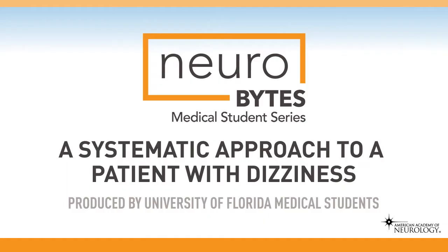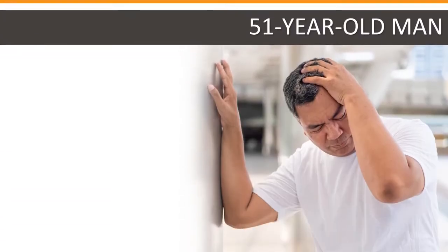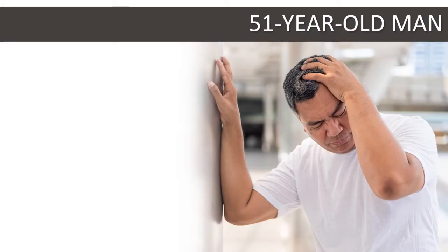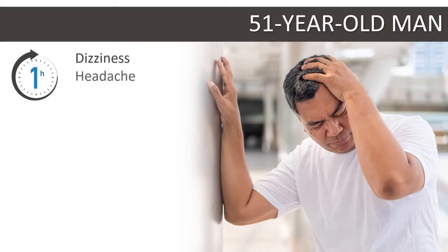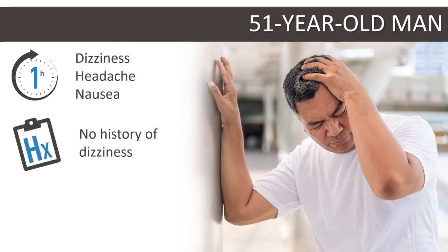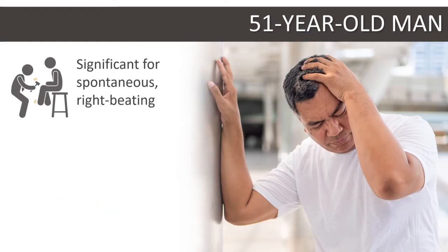A systematic approach to a patient with dizziness. A 51-year-old man presents to the emergency department with a one-hour history of dizziness associated with headache and nausea. He has no prior dizziness episodes. His blood pressure is 159 over 89. Neurologic exam is significant for spontaneous right-beating and non-suppressible nystagmus and is otherwise normal.